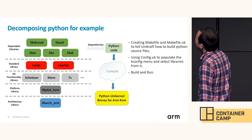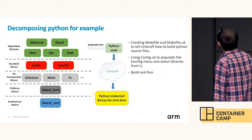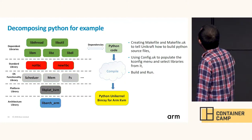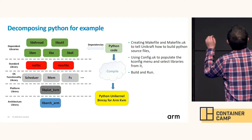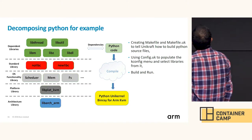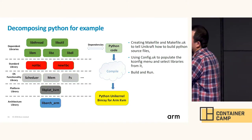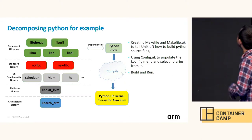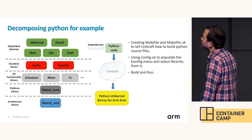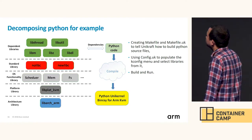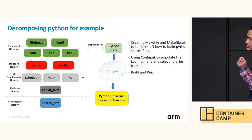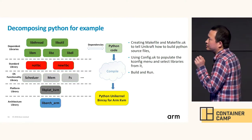If all dependencies for Python have been prepared in UniKraft, we can just create a makefile and makefile.uk to tell UniKraft how to build our Python source code. We use UniKraft menuconfig to select OS functionality libraries.